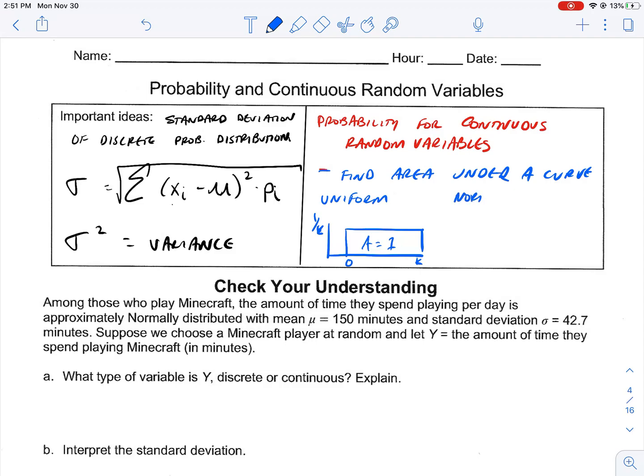Or it could be normal. In which case, we'll be doing what we did earlier this year, where we had normal, and we had our mean, and our standard deviation. And we would use our z-score. Our z-score was equal to our x minus our mean over our standard deviation. And we use our table A or our normal CDF, our function on our calculator.